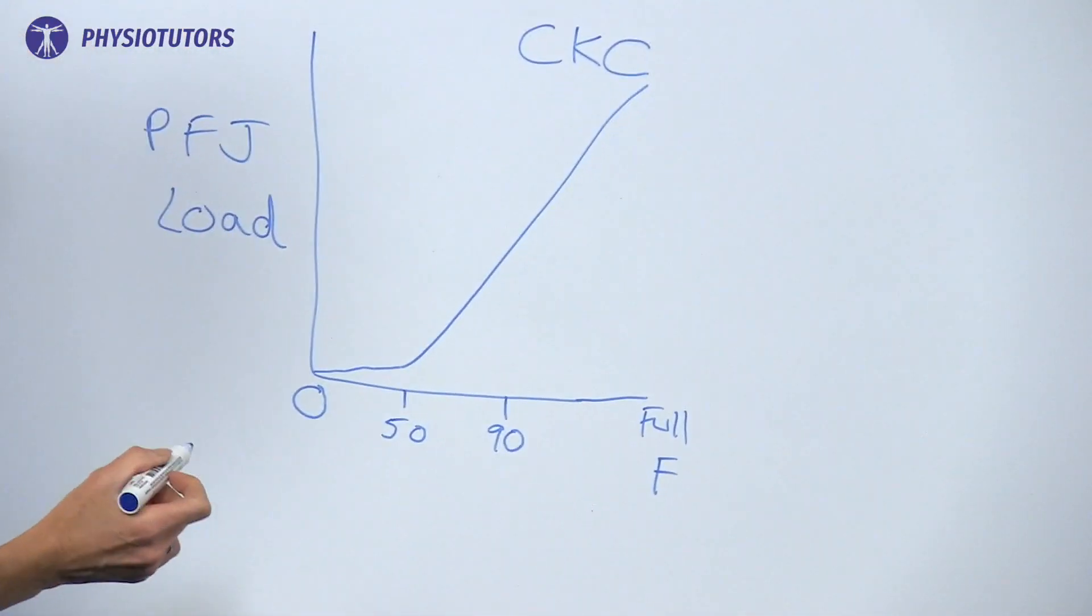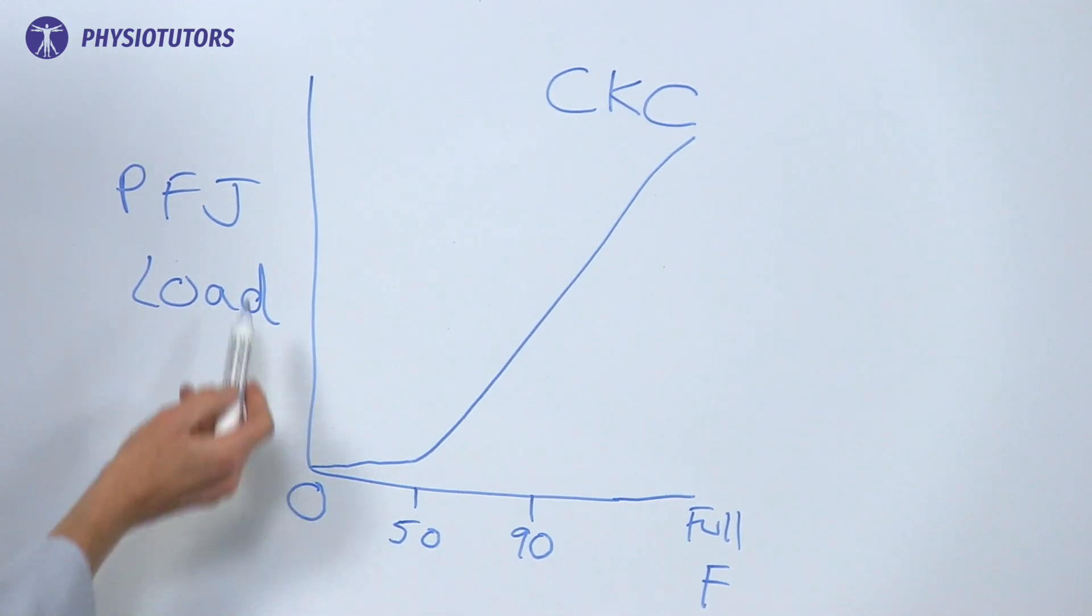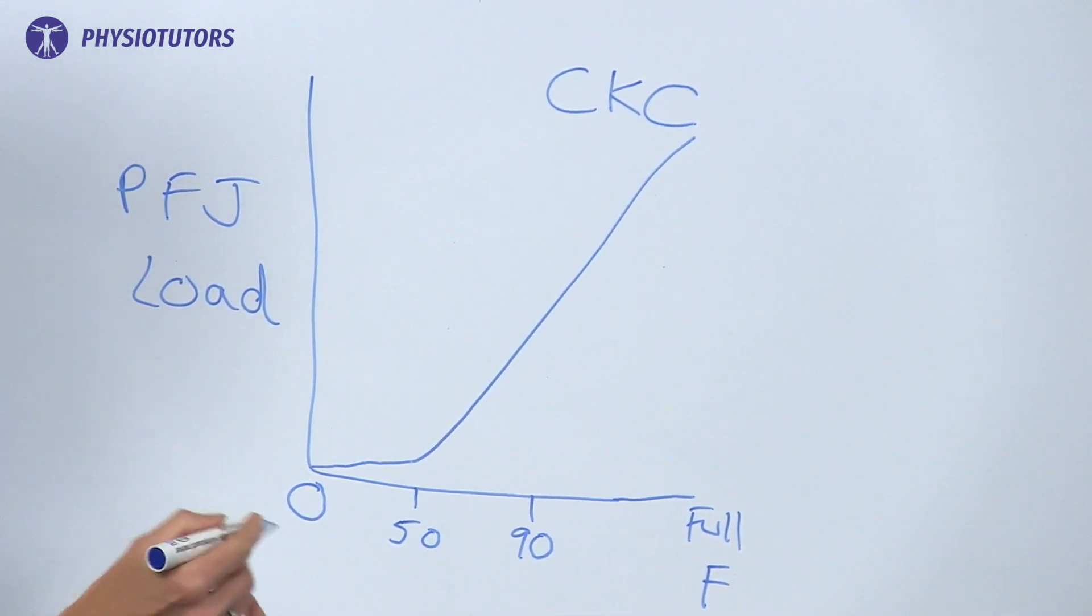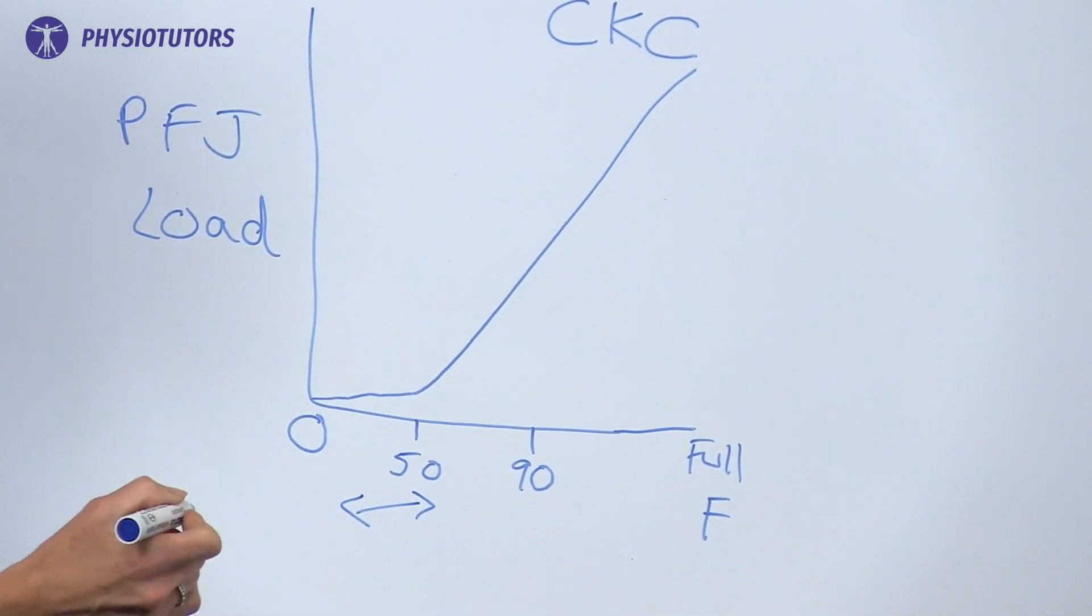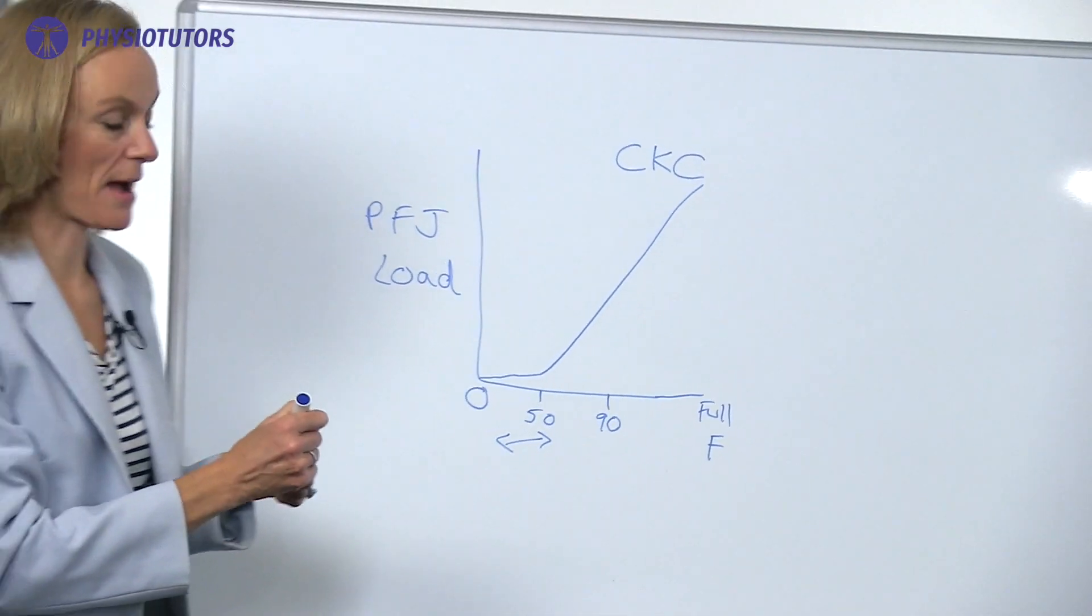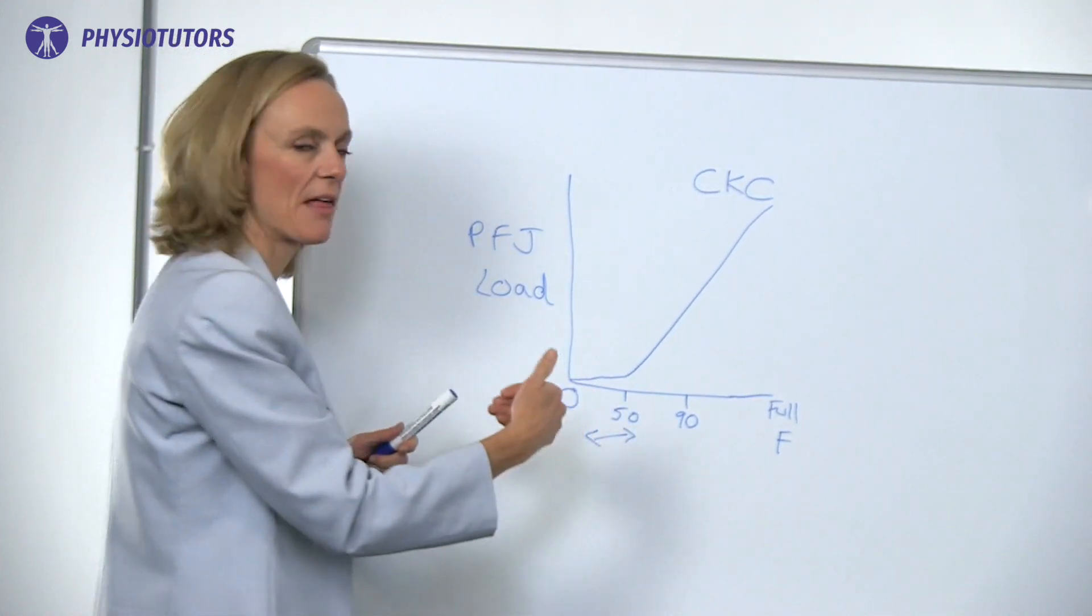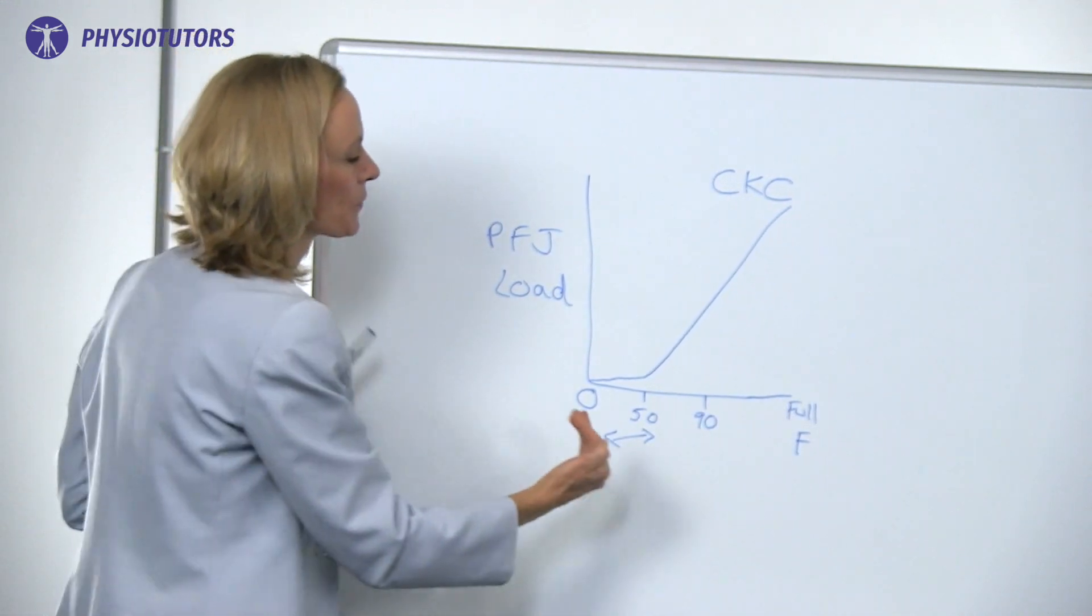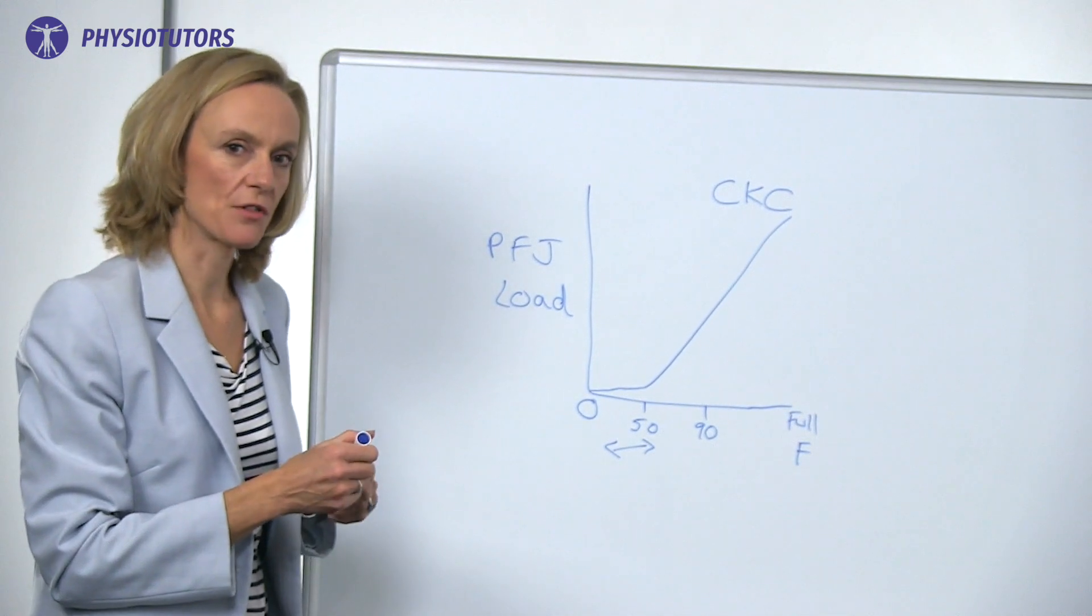We can use this information really wisely to say we don't want really high patellofemoral joint load in an irritable patellofemoral joint, but we do want quads load. So we can take this angle here and load this up, perhaps with more weight in that range, and then once they've got more strength on board and the joint is less irritable, we can start progressing into further ranges.